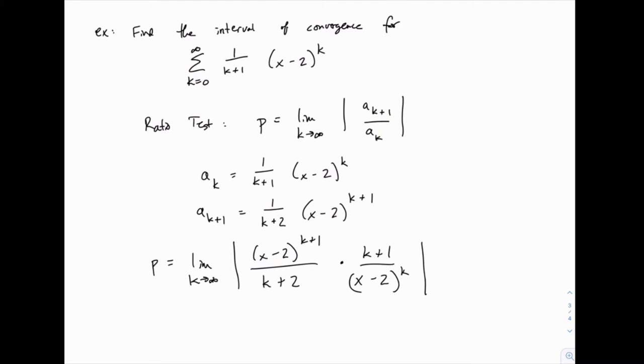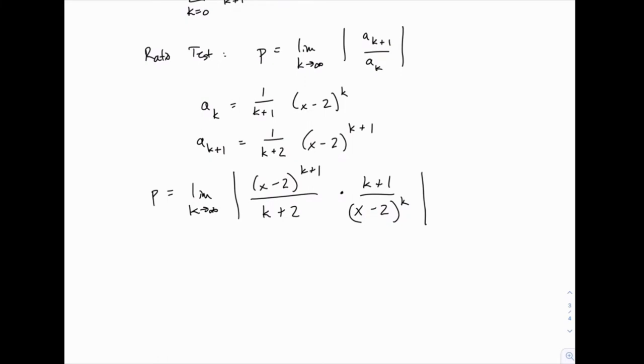So now we just need to simplify this. It turns out that just like in the first example we did, we have (x minus 2) raised to a power here and also down here, and so as we start to cancel them, there will be one more on the top than on the bottom. So when we're done canceling, there will be one (x minus 2) left in the numerator.